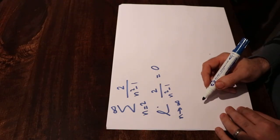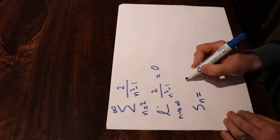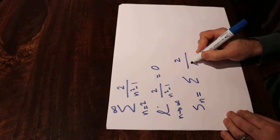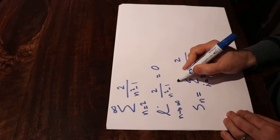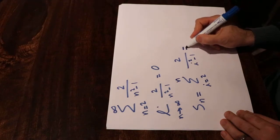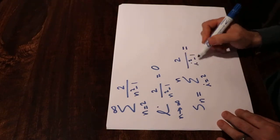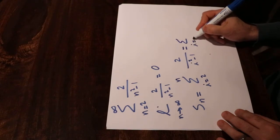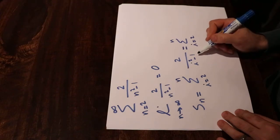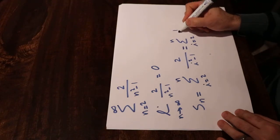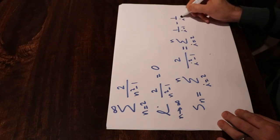Let's compute the partial summation of this series. That is Sₙ equal to sigma 2 divided by i² minus 1 when i changes from 2 to n. Using partial fraction decomposition, we can write 2 divided by i² minus 1 as 1 divided by (i minus 1) minus 1 divided by (i plus 1).